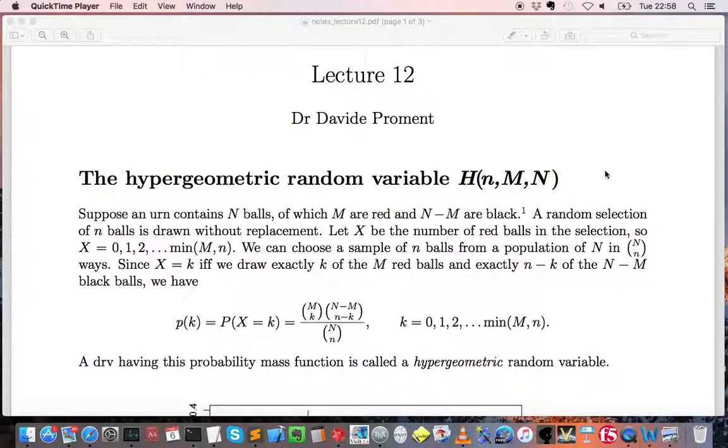In the twelfth lecture of Probability Theory, we considered the fourth and last specific case of discrete random variable, the hypergeometric random variable.